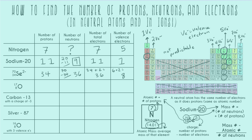Let's do a similar example. The number of protons is just the bottom-left number, eight — also confirmed as oxygen on the periodic table, number 8. For the number of neutrons: 17, the mass number for this particular oxygen atom, minus 8 equals 9 neutrons. There is no charge indicated, so we assume it's neutral — oxygen has 8 protons, so it has 8 electrons. For valence electrons, oxygen is in the sixth column, just like selenium, so it has six valence electrons.